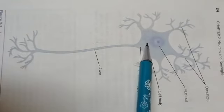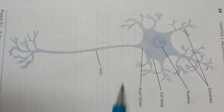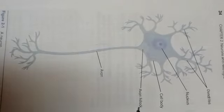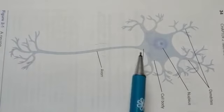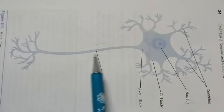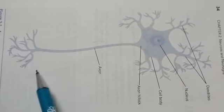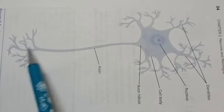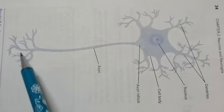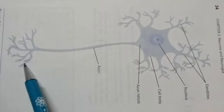The point where the axon starts from the cell body is called the axon hillock or axon hill, from where the axon initiates and terminates at the axonal terminal. This part is called the axonal terminal which is expanded into dendrites, and these dendrites have the neuronal buttons or nerve terminals.